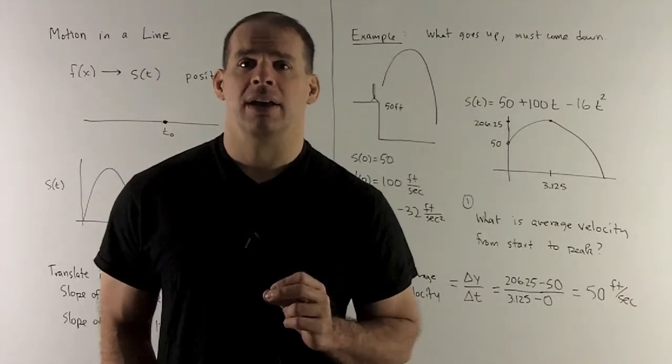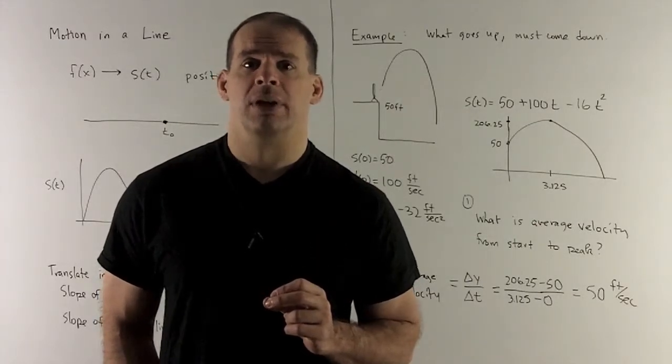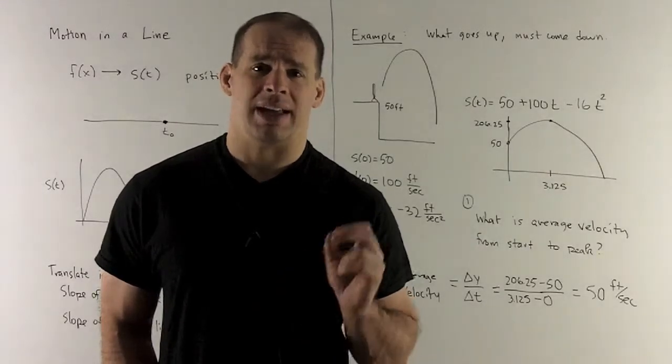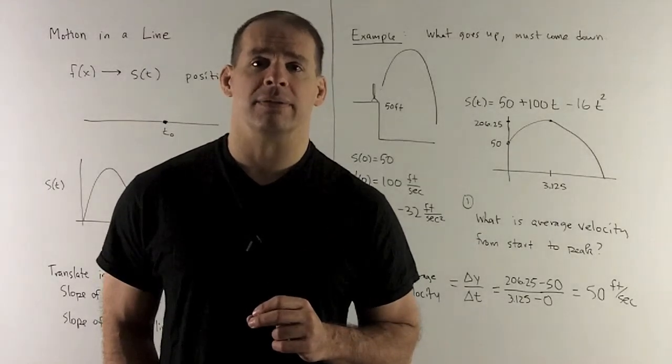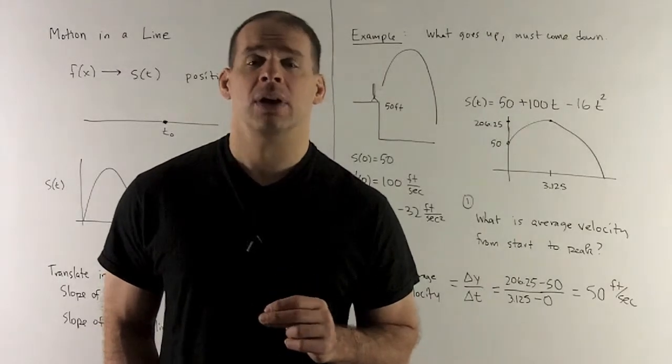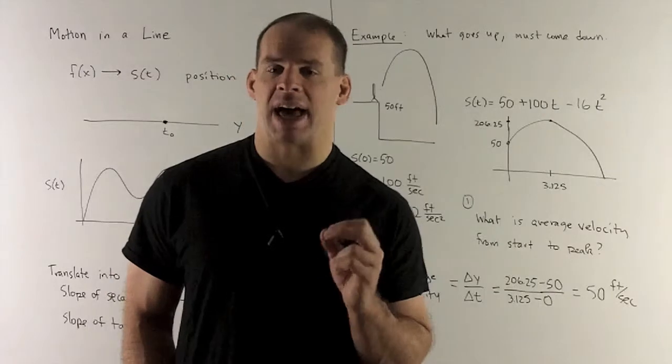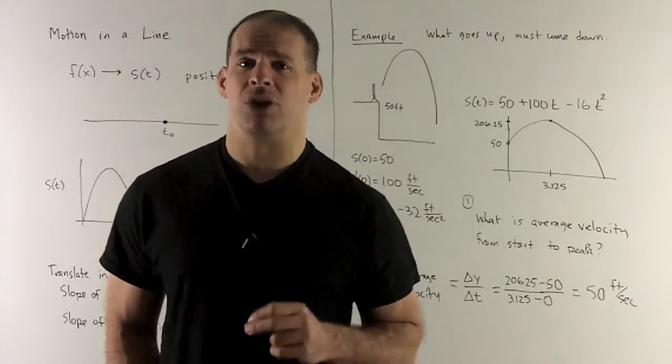All right, let's work out an average velocity. So find the average velocity between time equals zero and time equal to 3.125. Okay, why 3.125? We'll see in a second that that's going to be where the peak occurs. That's the time where you reach your highest point.